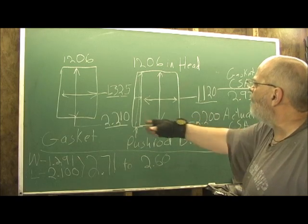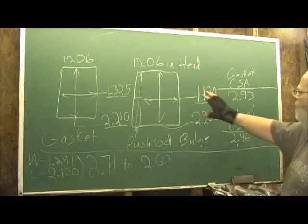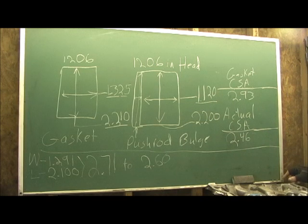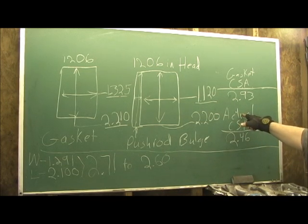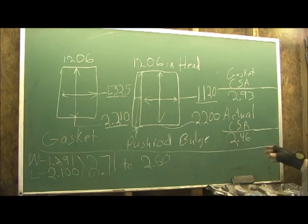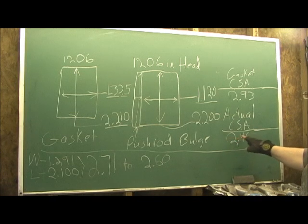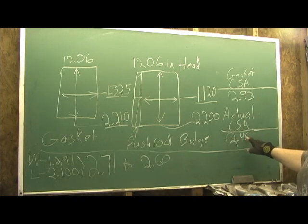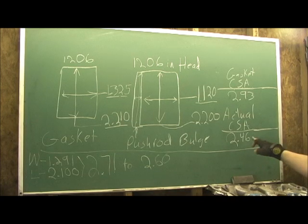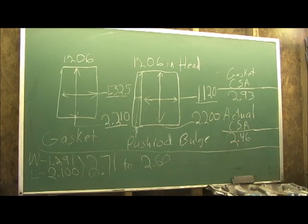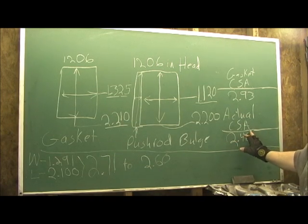Now, if we do the cross sectional area on them two, the actual, which is what you're going to have in the head, is 2.46. Now this is where it gets critical. So at the pinch point of the head, 2.46 is your cross sectional area point.